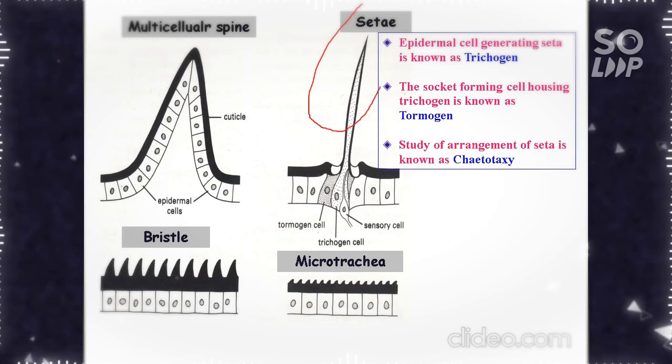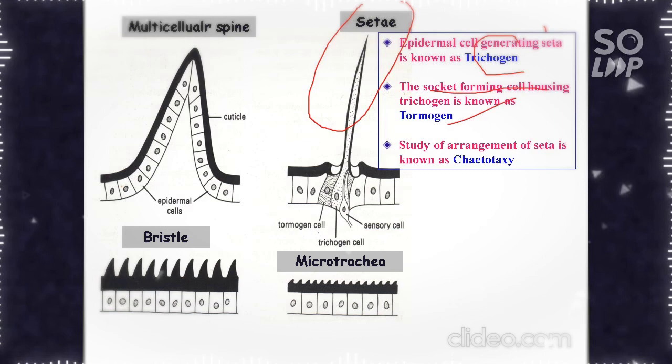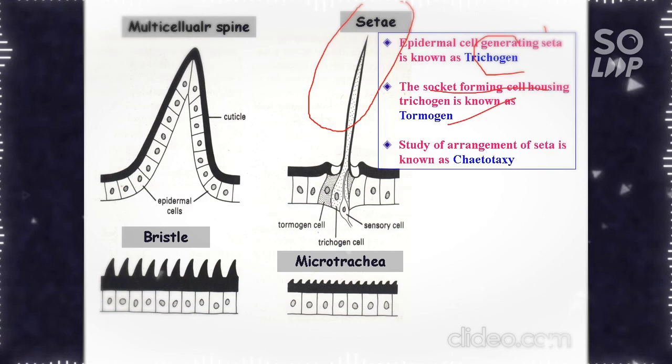You can see the setae, the hair-like structure, which is unicellular in origin. The epidermal cells generating the setae are called trichogen and the socket-forming cells are called tormogen. The study of arrangement of setae is known as chaetotaxy, which is an important concept. This is the microtrachea, which is non-cellular in origin.